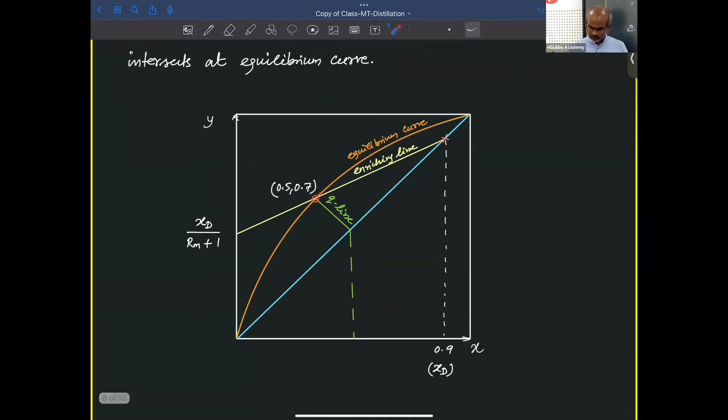If we can make an equation based on these two data points, it is possible, for a straight line it is enough to know the two points in the line. Once the equation is available, the intercept of this equation for X equal to 0 will give you XD/(RM+1). XD value is already available, and from that we will be getting RM, which is the minimum reflux.